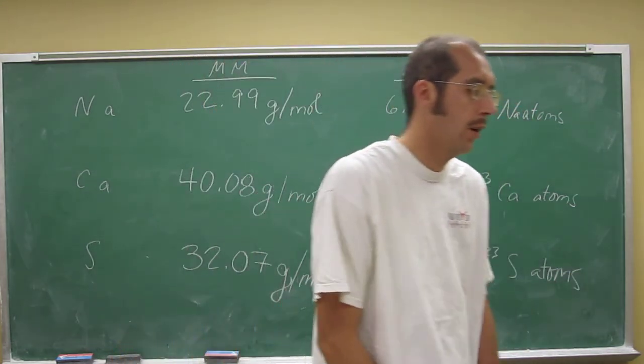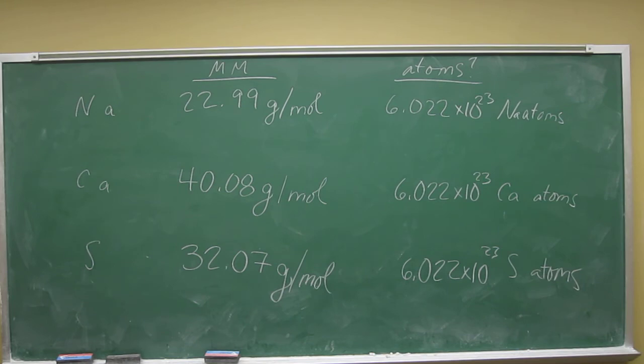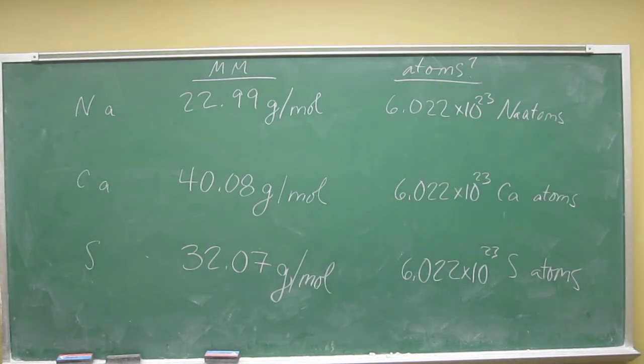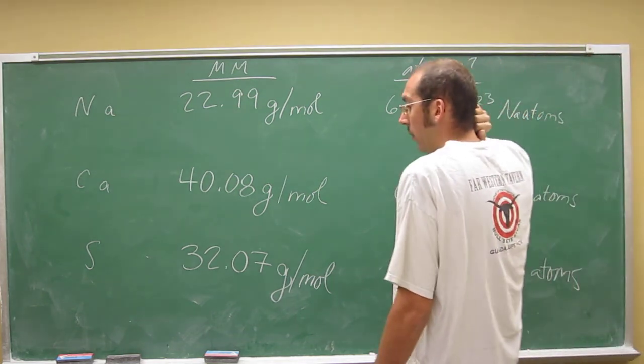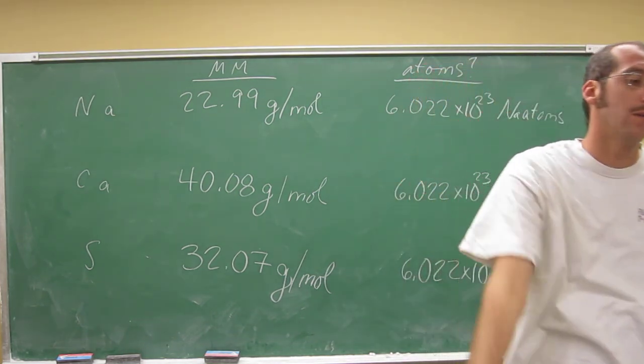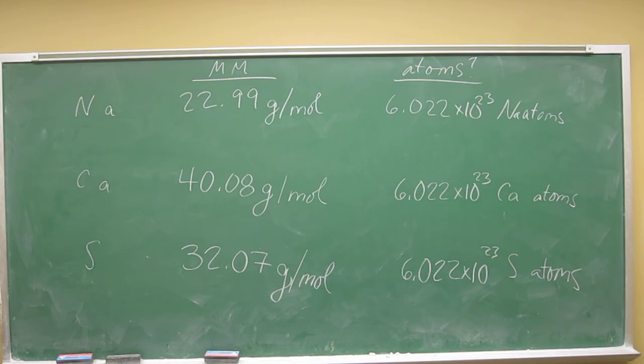Okay, so one mole weighs the same number of grams as one atom weighs in Daltons, that you see on the periodic table, or the average mass of one atom that you see on the periodic table. And one mole always contains 6.022 times 10 to the 23rd of anything.